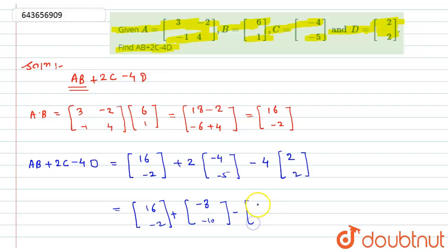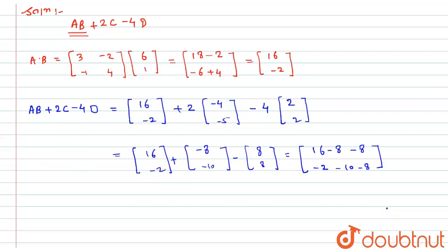Now according to the matrix addition and subtraction here, I will do 16 - 8 - 8, and here it will become -2 - 10 - 8.